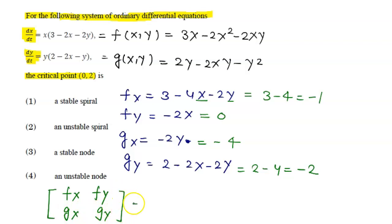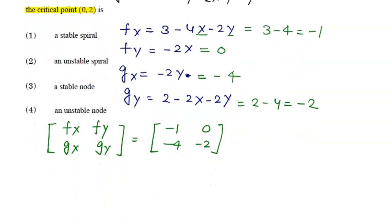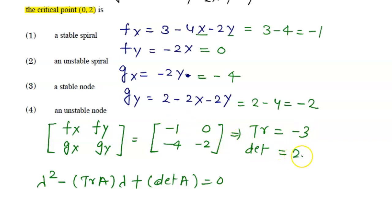At that critical point we have the Jacobian matrix with entries minus one, zero, minus four, minus two. We have to look at the eigenvalues — whether they are real or imaginary. So we use the characteristic equation: lambda squared minus trace of matrix A times lambda plus determinant of A equals zero. Here we need to look at the trace.